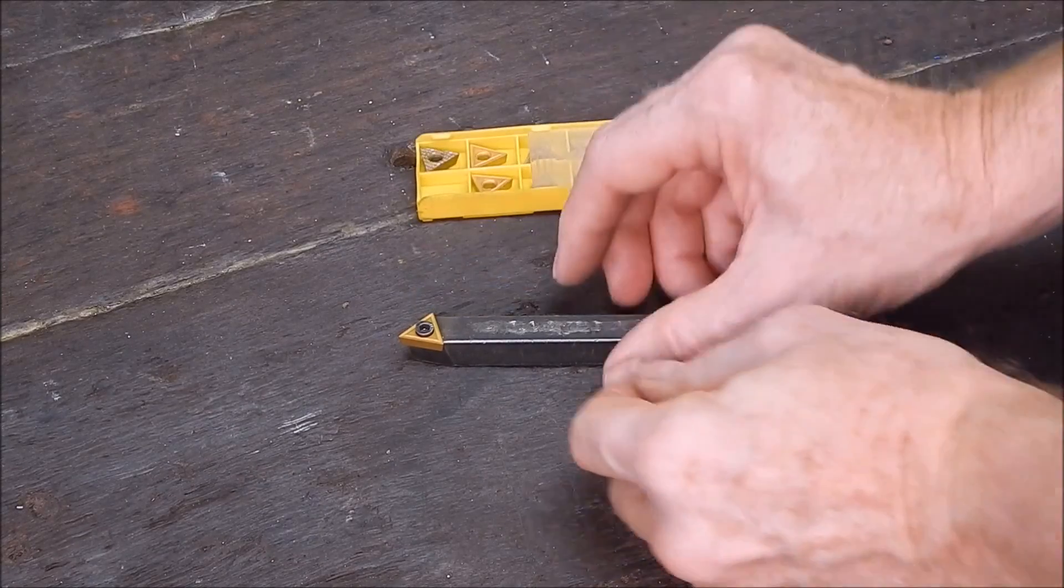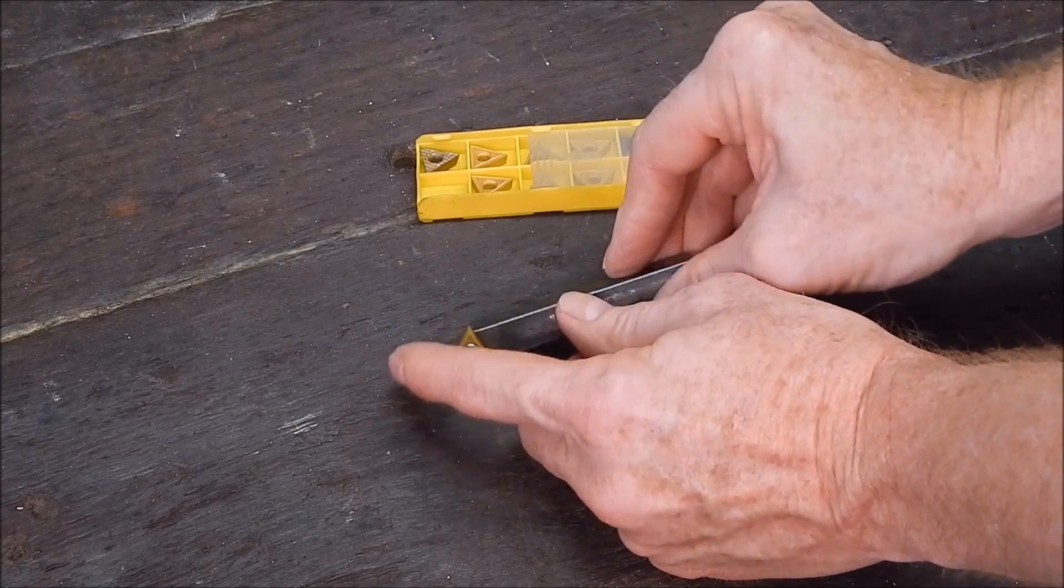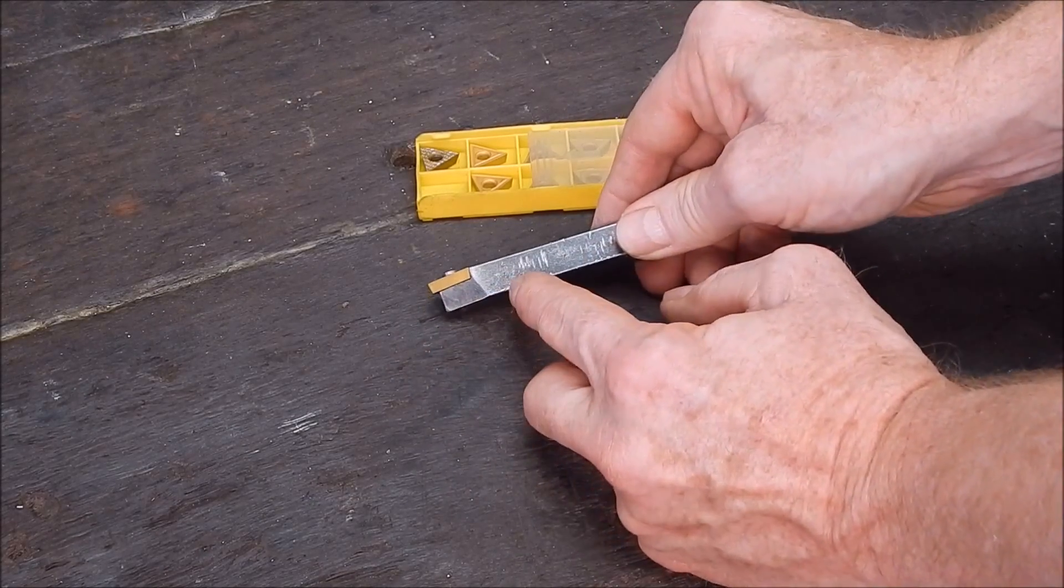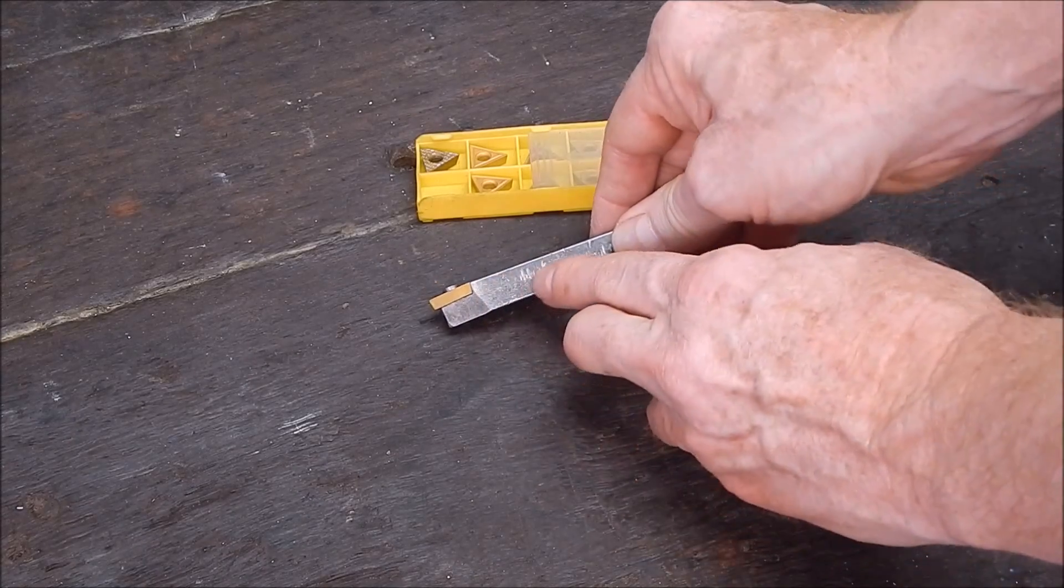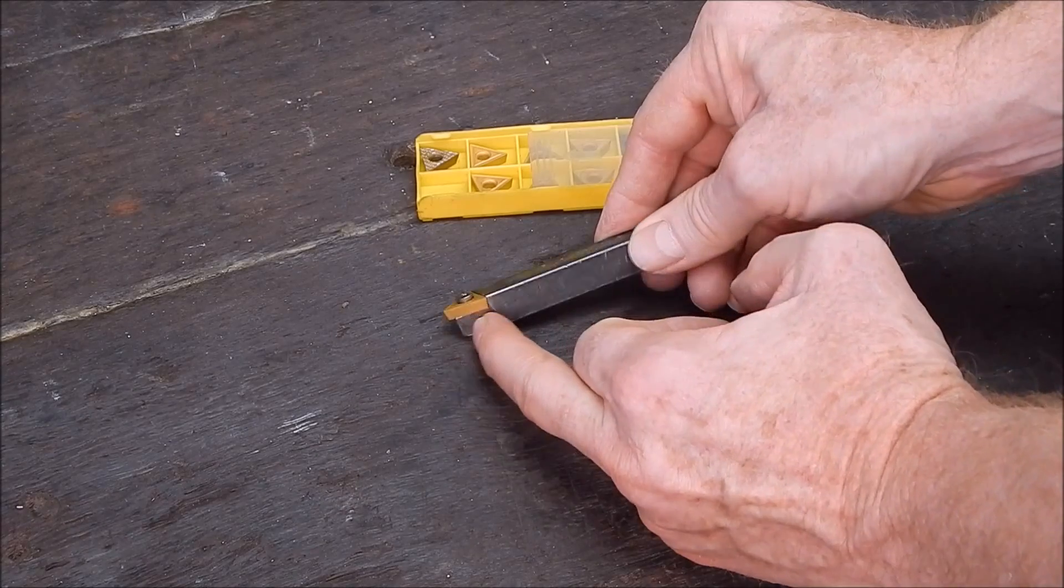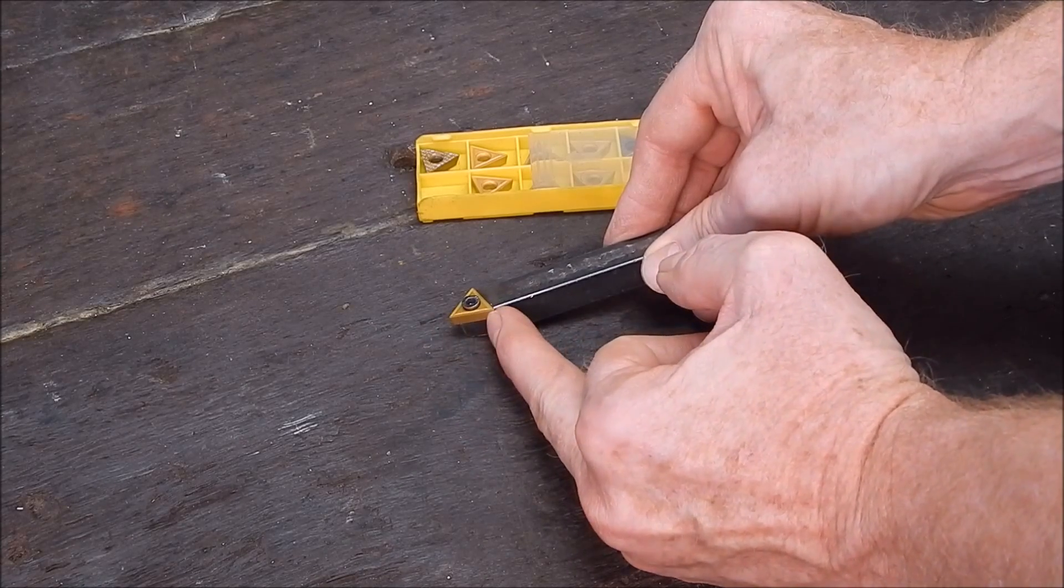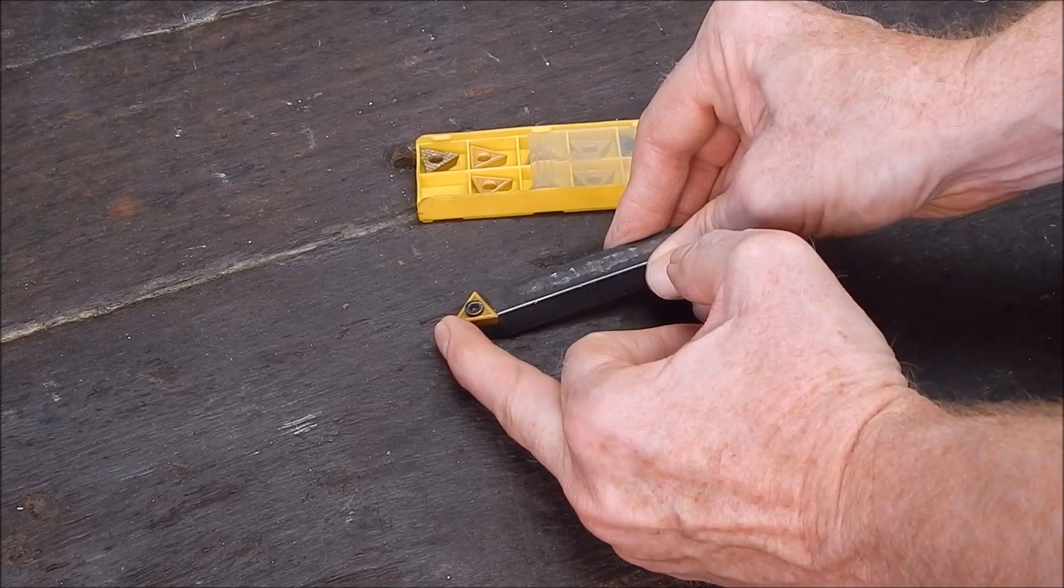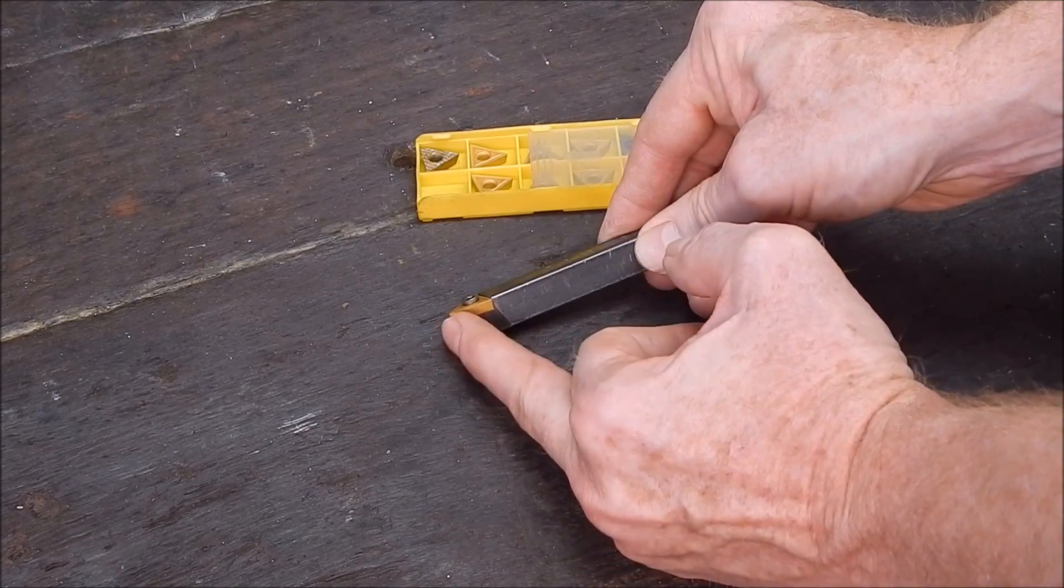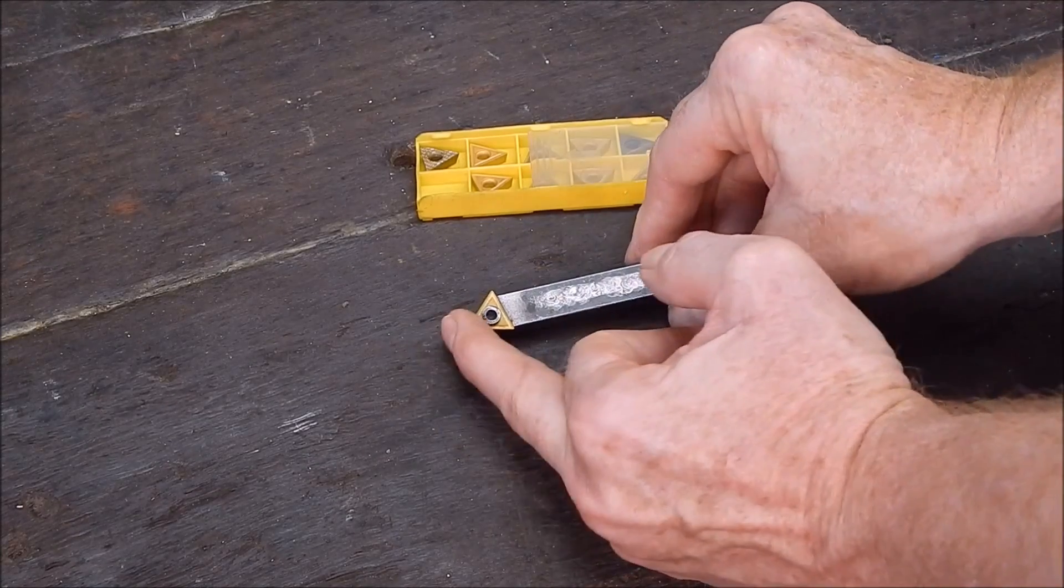Well you can regrind them if you've got a green stone and you can regrind them in the holder and just do the faces, but you've got the risk of grinding on your insert holder and you may want to reshape it completely. I mean I often use these old inserts, bronze them onto boring bars and stuff like that, so I'll grind them to shape roughly before I bronze them and then just finish them off on the boring bar.